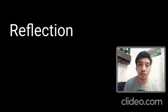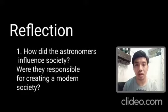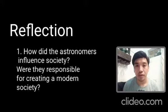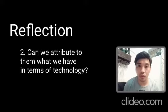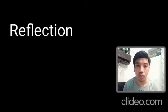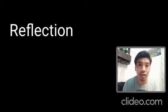By now, I want you to reflect. Since we've focused on astronomical observations and scientific inquiry, reflect on how Isaac Newton, Tycho Brahe, Galileo Galilei, and Nicholas Copernicus influenced society. Were they responsible for creating a modern society? Can we still attribute to them what we are experiencing right now in terms of the providence of technology? If they were not able to come up with scientific theories, what would our thinking of the world or of the universe be today? Let's pause for a while to allow you to contemplate on answers to those essential questions.